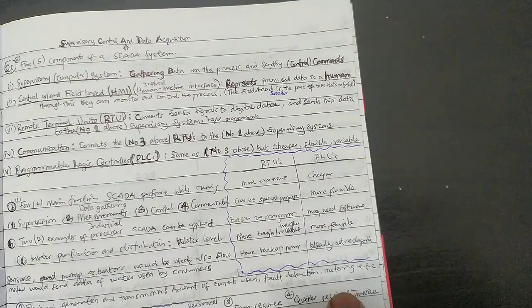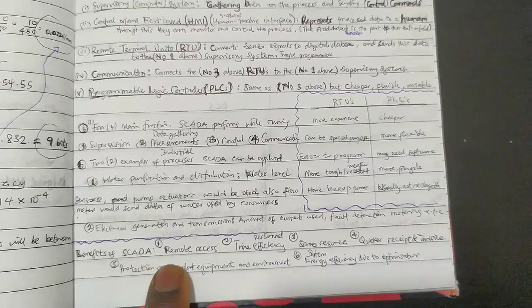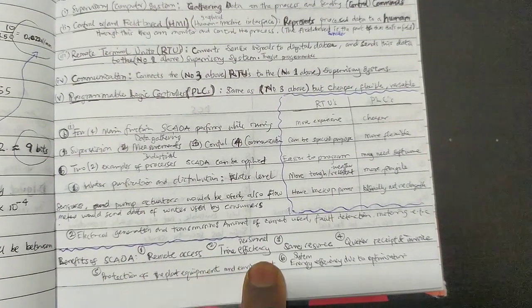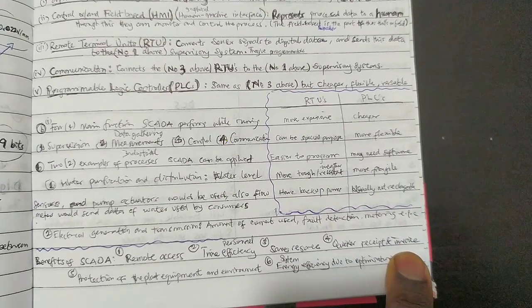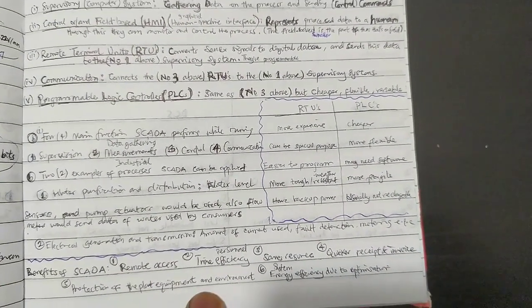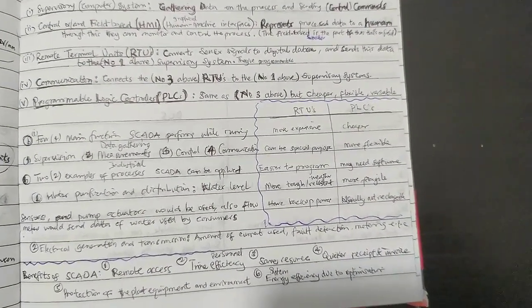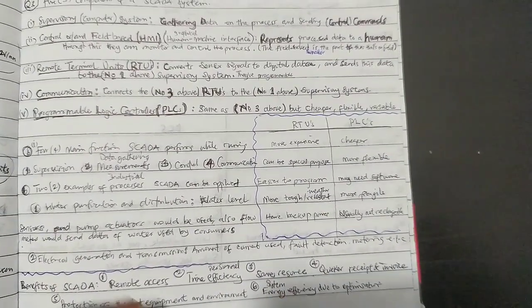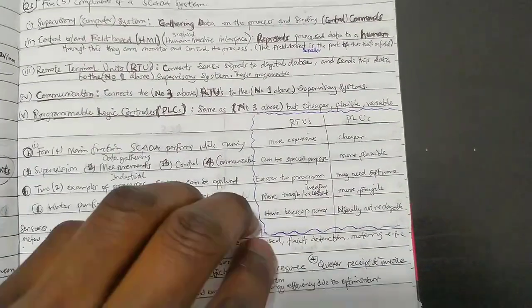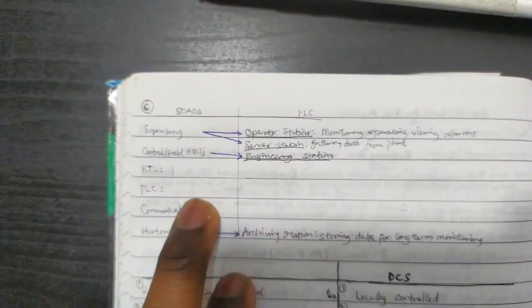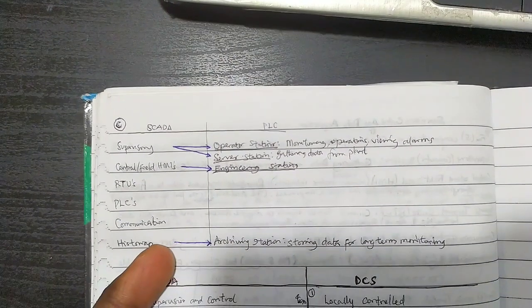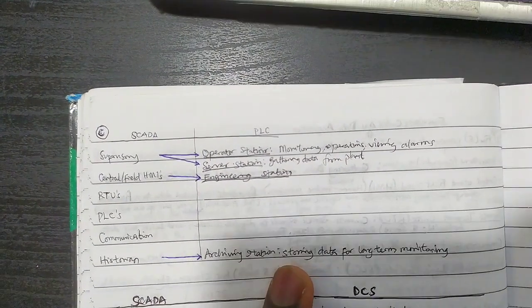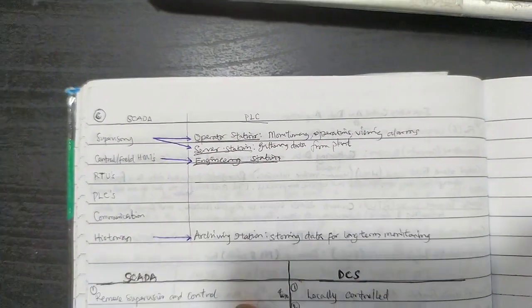Benefits of SCADA: remote access, time and personnel efficiency, save resources, quicker invoicing, protection of plant equipment and environment, energy efficiency, and optimization. These are the similarities—they both have supervisory. I just mapped components of SCADA to that of PLC a little bit. It's not that way in the lecture notes.